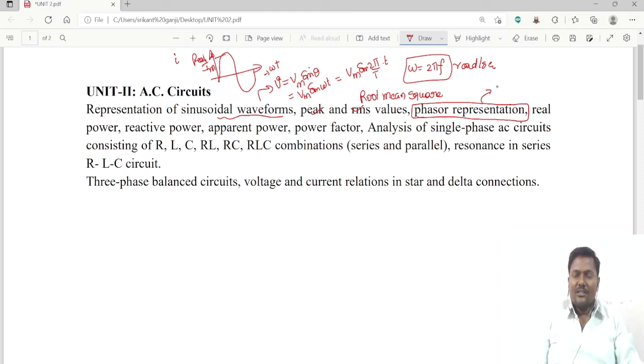Phasor representation of an alternating quantity is asking for 8 marks. After that, real power - P is called the real power, reactive power is represented with Q, and apparent power or complex power can be represented with S. The power factor is cos phi.